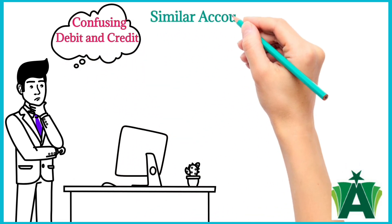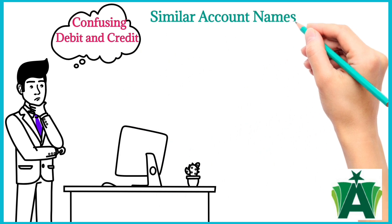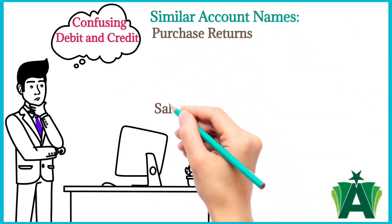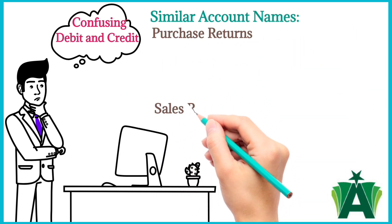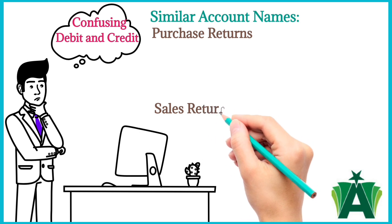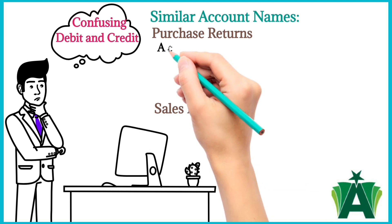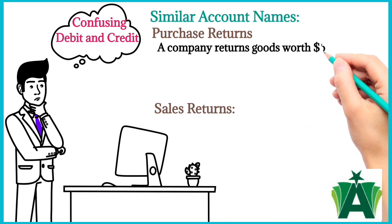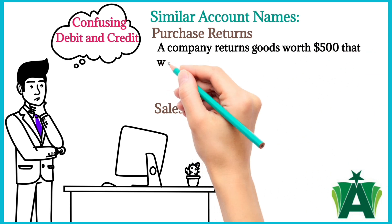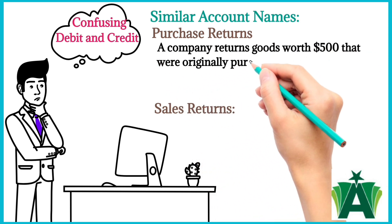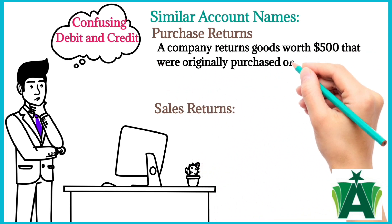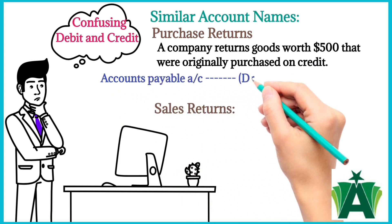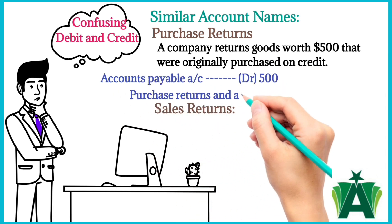Similar account names: purchase returns and sales returns sound similar but function differently in journal entries. For example, a company returns goods worth $500 that were originally purchased on credit. The journal entry would be: accounts payable account debit, purchase returns and allowances credit.